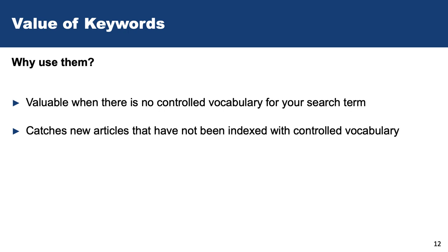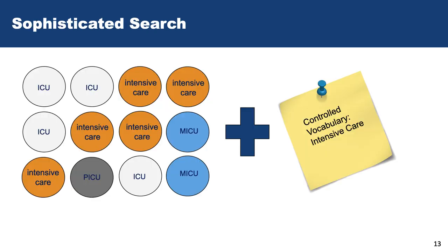If we only search with MeSH we're missing out on articles that haven't been tagged. A lot of technology terms like augmented reality, text messaging, and smartphones took a while to become official MeSH terms. It also takes up to six months for indexers to tag new articles. So if we're only using MeSH, we miss those new current articles. What we typically do is stick with MeSH and then add keywords to make sure we haven't missed new articles.